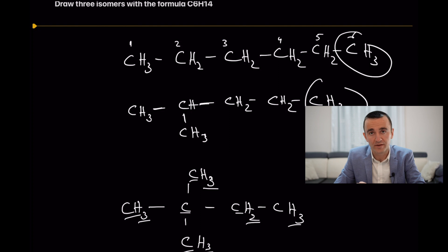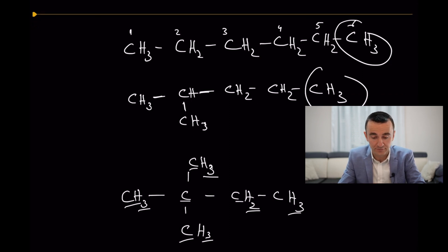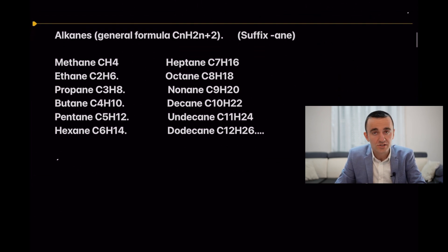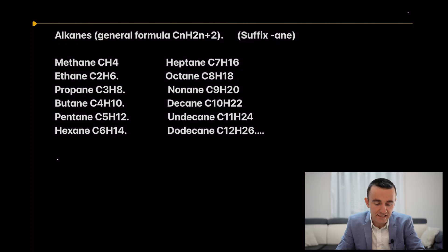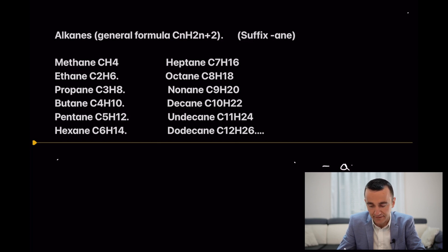Now you may want to name these compounds, but first let's learn some basics for alkanes — how to name them. After that we will come back to give the names for these compounds. The general formula for alkanes is CnH2n+2, with the suffix '-ane'.